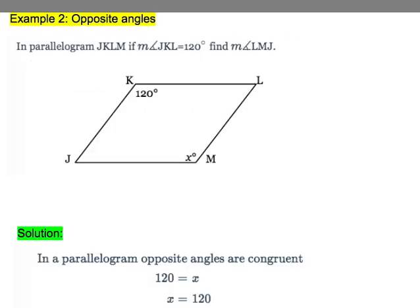So we have that if angle K is 120, because they're congruent, 120 is equal to X. X is equal to 120. They're congruent.